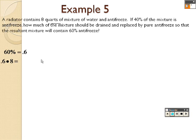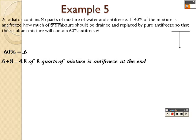There's 8 quarts. So 0.6 times 8 is 4.8. So 4.8 of 8 quarts of the mixture is antifreeze at the end. That's what we know. So what we have is 4.8, which is what you want, equals 8 quarts minus... because remember we're talking about being drained and replaced.